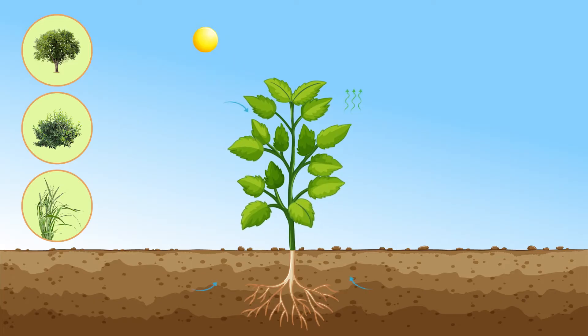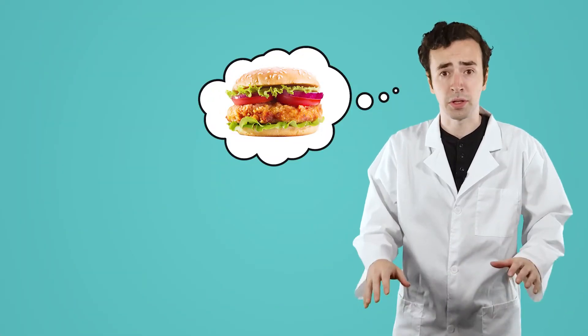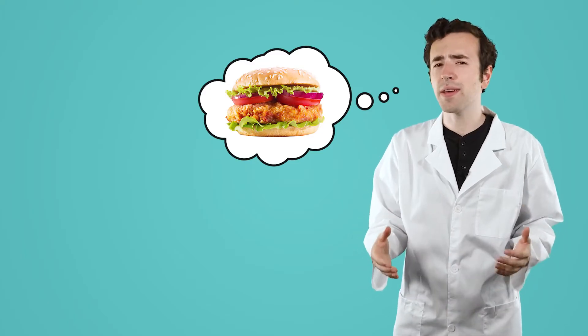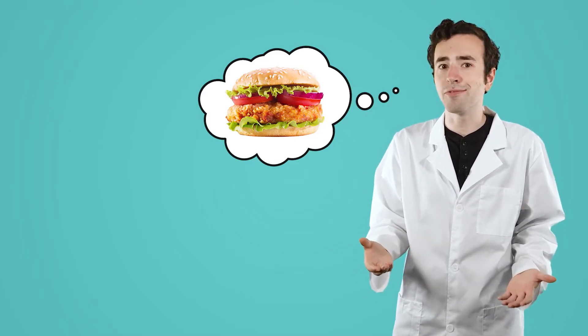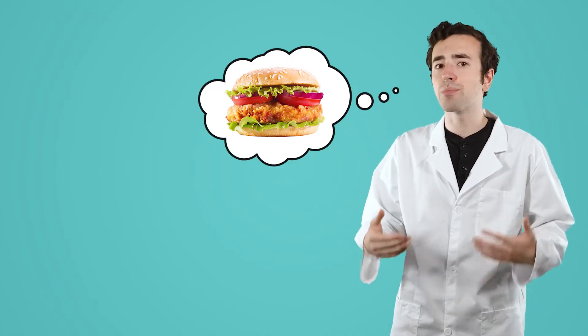Because of this unique ability, producers play a key role in keeping an ecosystem thriving. Thinking back on my delicious sandwich, the energy in the lettuce, the onions, the slice of tomato, and the grains in the bun all came from producers.